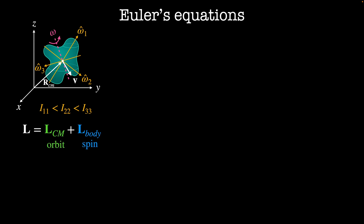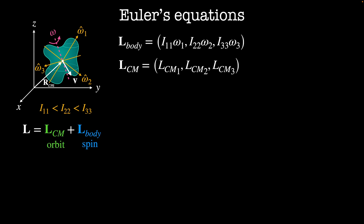However, if the axis of rotation doesn't stay fixed, either with respect to the lab frame coordinates or the body coordinates, calculations in the lab frame become challenging, so using the body frame is easier. In this frame, the angular momentum is just i11 omega 1, i22 omega 2, and i33 omega 3. Likewise, the angular momentum for the center of mass can be expressed in the new basis. However, the new basis isn't an inertial coordinate system, so we'll need to deal with that when we work out what the torques on the system are.